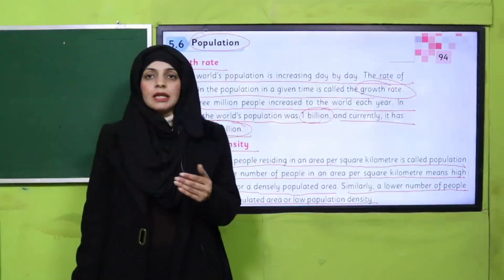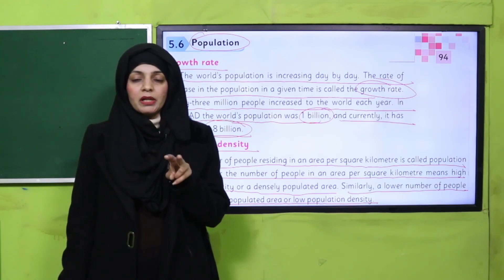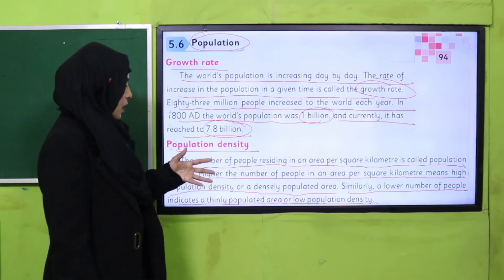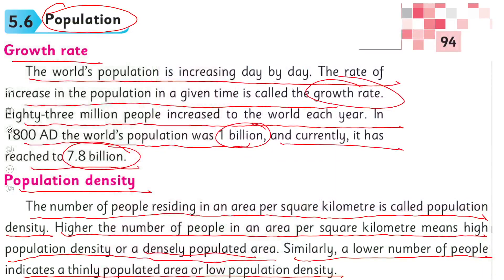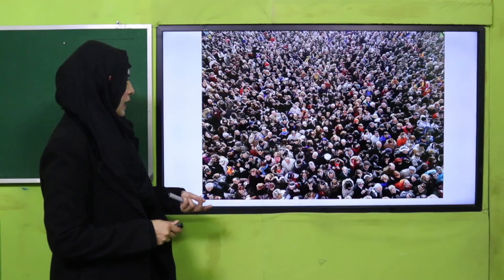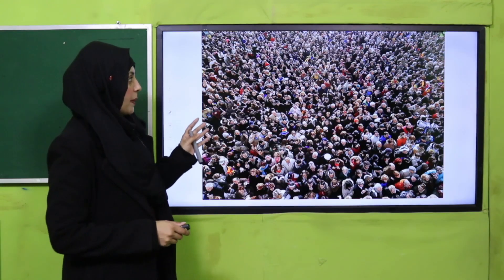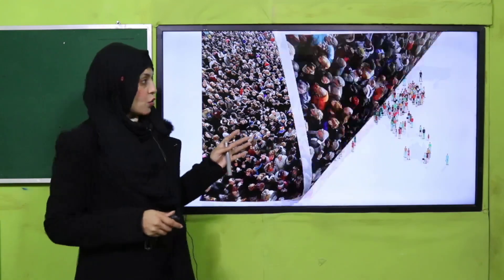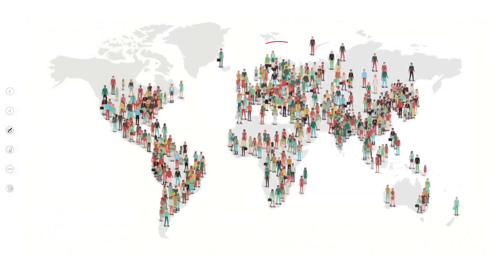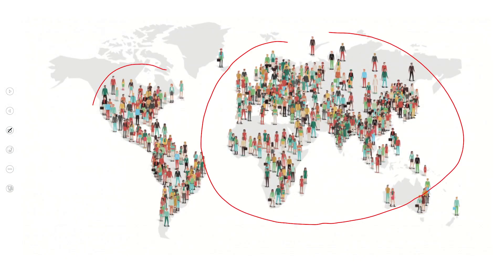Population density per square kilometer ko hum do cheezon mein divide karte hain: densely populated or high density area, and low density or thinly populated area. This area is densely populated and this area is thinly populated.